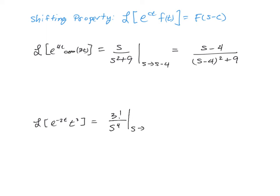So we simplify down, 3 factorial is 6, and then down below, we're going to actually have s plus 2 now raised to the fourth power.